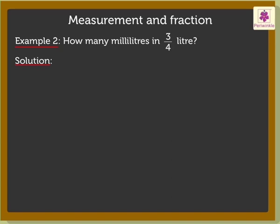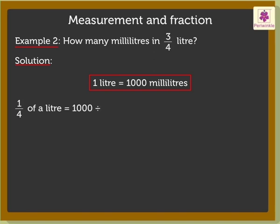Firstly, we will find what is 1 fourth of a liter. We know that 1 liter is equal to 1000 milliliters. So, 1 fourth of a liter is equal to 1000 divided by 4 which is equal to 250 milliliters.